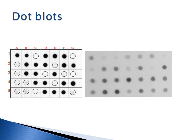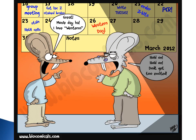Here on the left is a schematic of a dot blot, and on the right is an actual dot blot result, where probed samples produce dark circular dots at positive locations. It's critical to spot your sample in a very specific pattern so you can identify which location corresponds to which sample — for example, a location that doesn't light up is a negative result for whatever sample was placed there. That covers visualization methods for nucleic acids.